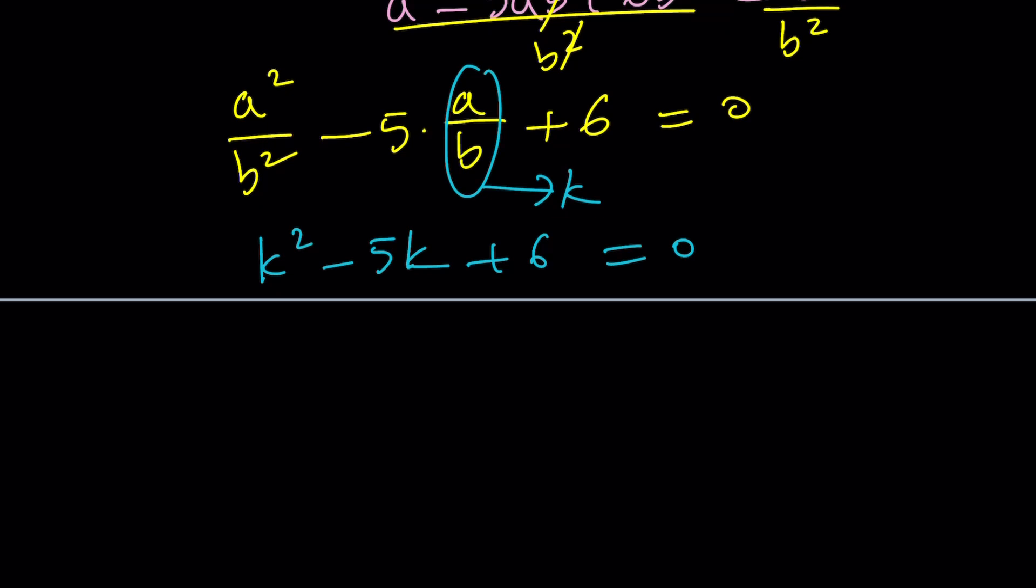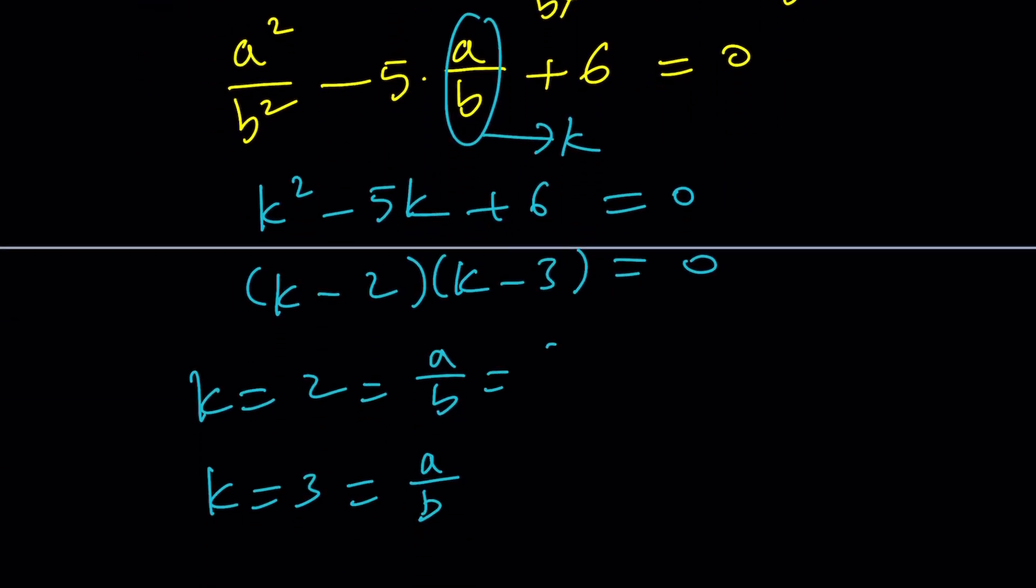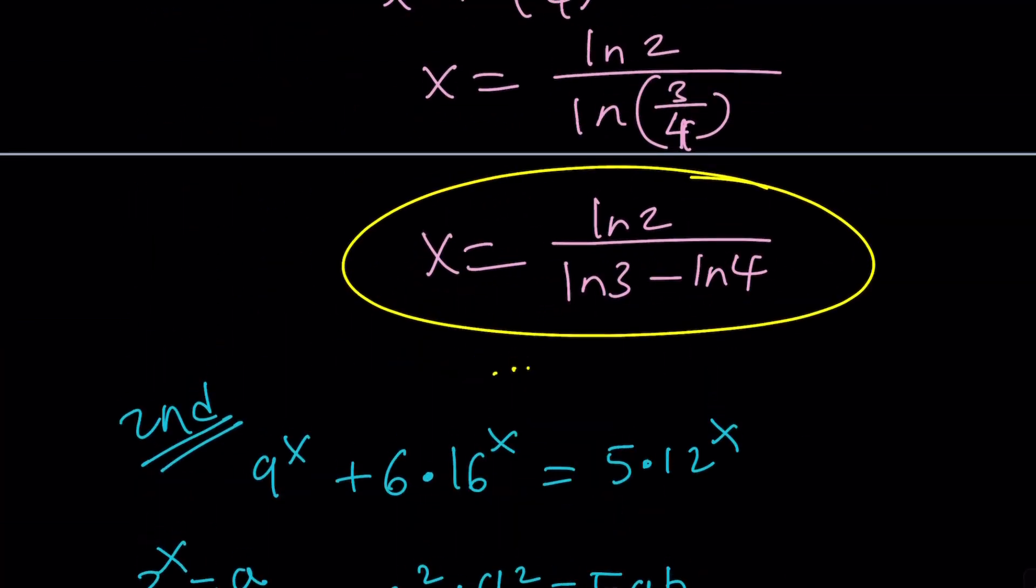Guess what? This is actually quadratic and it's factorable. k minus 2, k minus 3. Do those numbers look familiar? And from here we get k equals 2 or k equals 3. But k is a over b. So a over b is 2 or a over b is 3. But what is a over b? a is 3 to the x, b is 4 to the x. So this is 3 to the x over 4 to the x which is equal to 2. From here, 3 over 4 to the x equals 2 or 3 over 4 to the x equals 3. And we get the same solutions.